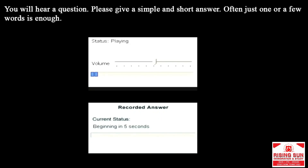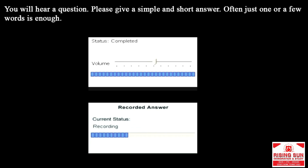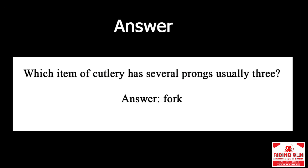Which item of cutlery has several prongs, usually three? Answer: fork.